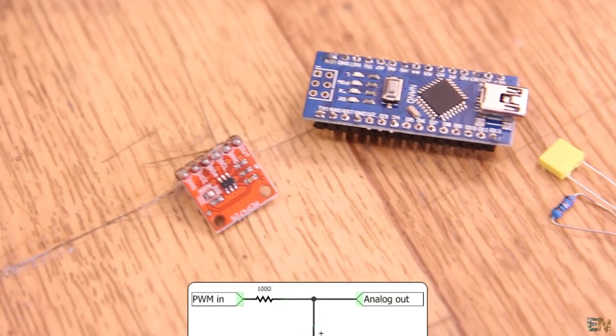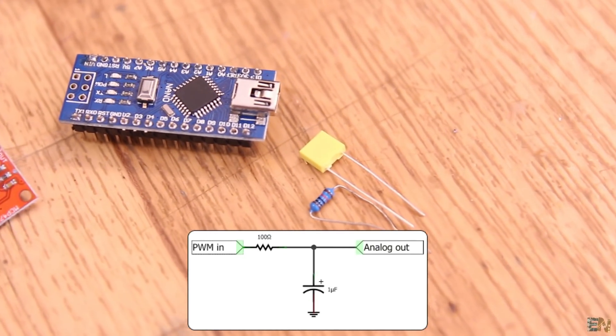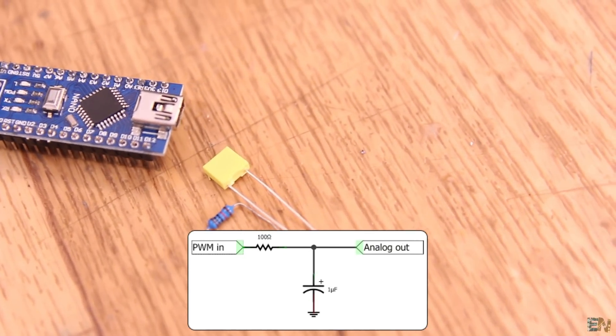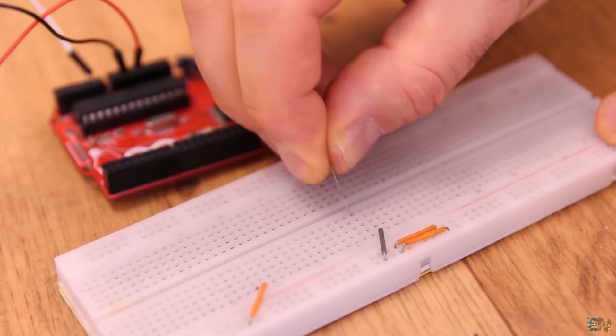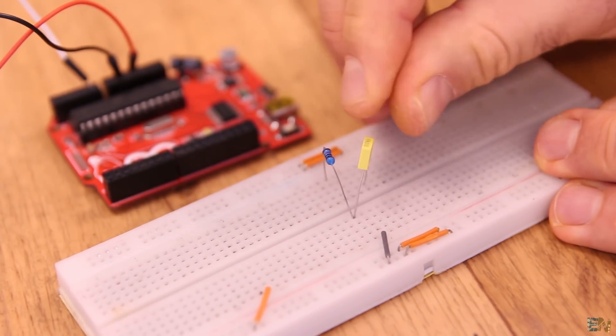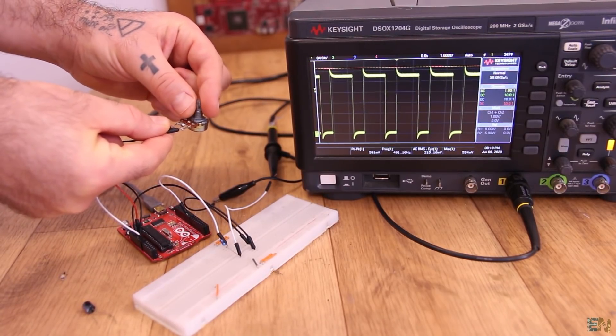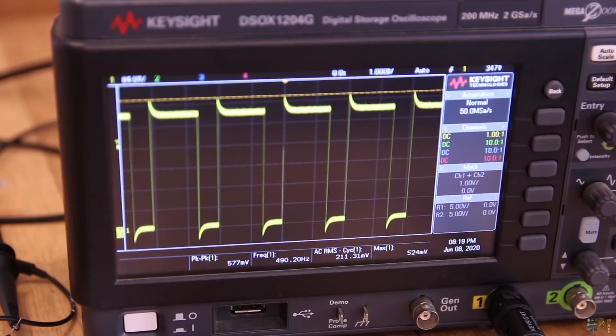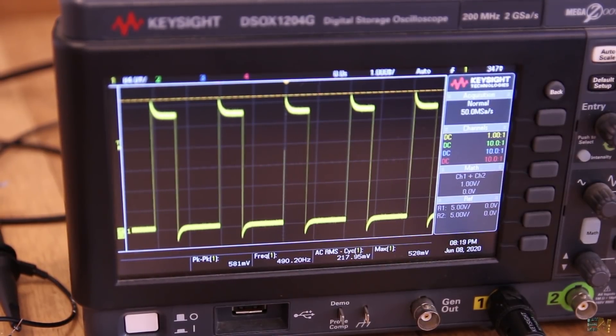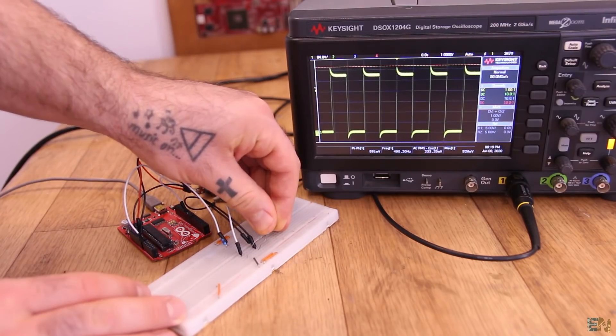So one way to control the voltage digitally is using a PWM signal with a filter. The most simple circuit is this one. The PWM signal from the Arduino connected to a resistor and a low-pass capacitor. I make a test with this circuit with the Arduino. So this is the PWM signal without the capacitor. As you can see, I can control the width of this signal with the potentiometer. But now I add a capacitor and there you go.